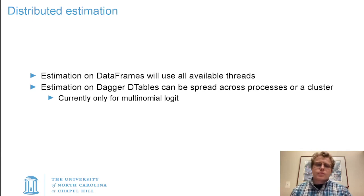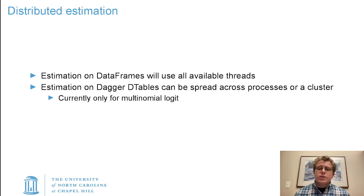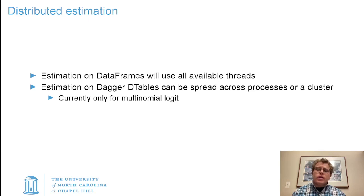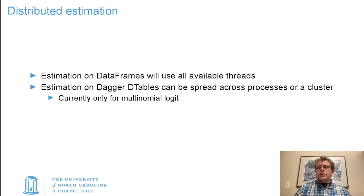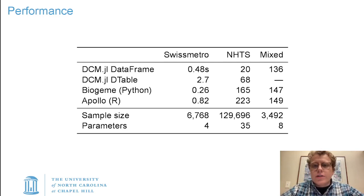In addition to the mathematical side, there's also the performance side. DCM.jl allows distributed estimation. If you're just using a data frame or any Tables.jl source, which is the simplest way to use the package, that's going to use all the available threads in your Julia process for higher performance. If you have a bigger problem and you're willing to take on a little more complexity, you can also do estimation on a DTable from Dagger — I believe it's actually just been split out into a new package — which allows working with tables spread across multiple processes or even multiple machines in a cluster. Currently, that's only supported for multinomial logit.